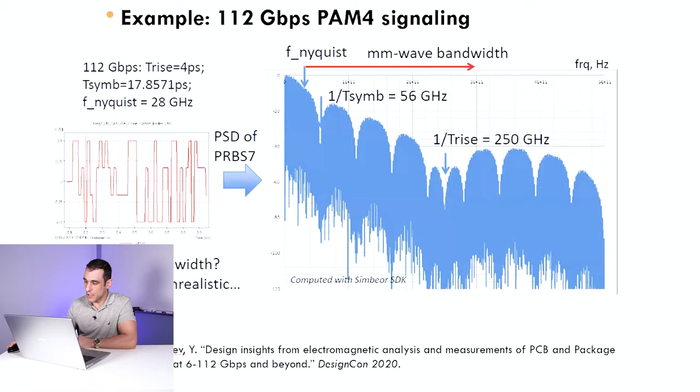but it does take into account all of the effects that happen in a high-speed channel. So here what I'm looking at on screen is an excerpt from this design con paper that I've cited down at the bottom. And I think this is a really great design con paper because it really nicely shows some of the effects that you might see when you're operating at this 6 to 112 gigabit per second data rate range.